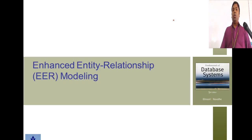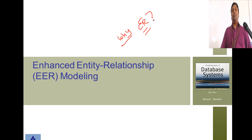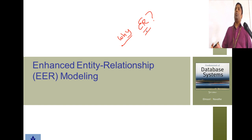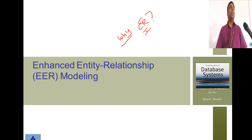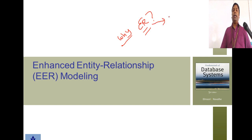What have you learnt so far? You know what an ER diagram is — Entity Relationship Modeling. You have learnt the basics of ER, understood why ER, and then we went into so many different parts of an ER diagram: entities, attributes, types of attributes, relationships, cardinality. We also understood how to convert an ER diagram to a relational schema.